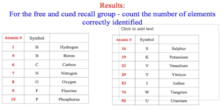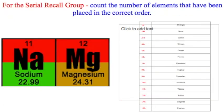Once the three groups have completed the task, we calculate the dependent variable — for each group, the number of elements correctly identified. For the free and cued recall groups, it's simply how many elements they've successfully identified. For the serial recall group, they must both identify the element and get it in the correct order according to atomic number — if it's in the wrong order, they don't get credit for it.